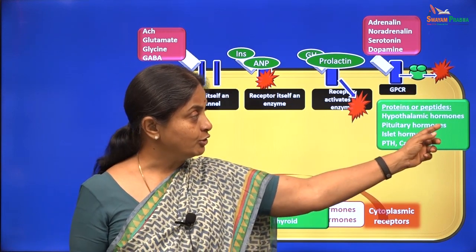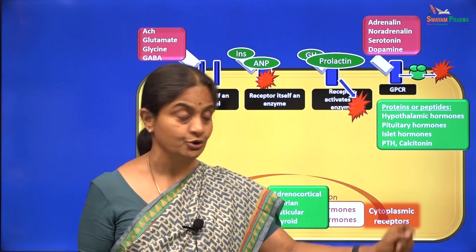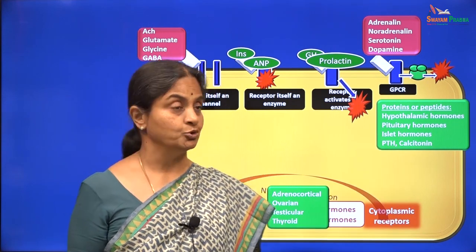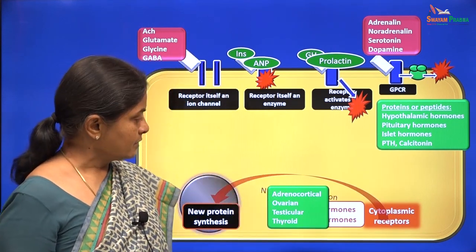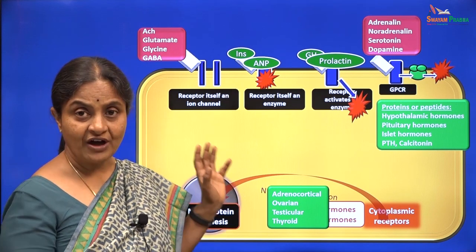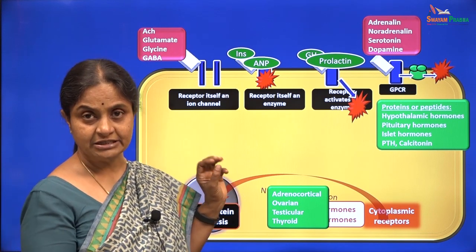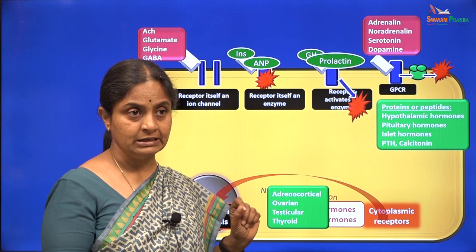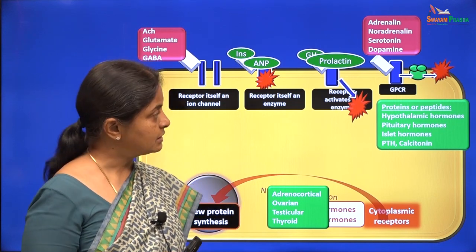You have to add vasopressin and oxytocin also to the pituitary hormones. So this is an overview of how neurotransmitters and hormones act through their respective receptors.